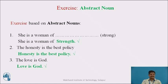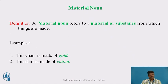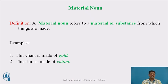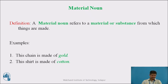Let us proceed to Material Noun. A Material Noun refers to a material or substance from which things are made. For example: 'This chain is made of gold' — gold is a Material Noun because it tells us the material from which the chain is made. Similarly, 'This shirt is made of cotton' — cotton is a Material Noun indicating the material from which the shirt is made.